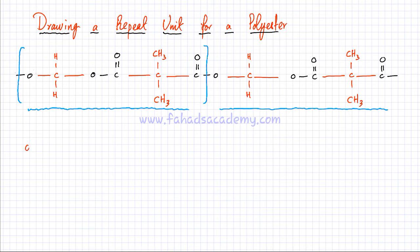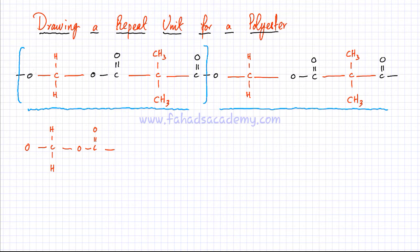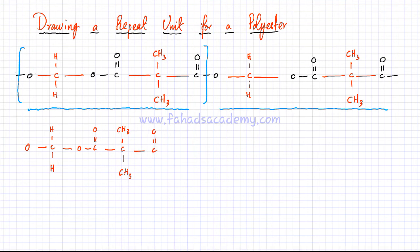Another way to represent this polymer chain is to write only this part. Starting from this side, you have oxygen, then a carbon bonded to two hydrogen atoms, after that another oxygen which is part of the ester link, then two methyl groups attached to a carbon in the middle, and after that C double bond O. It's very important to draw these continuation bonds.